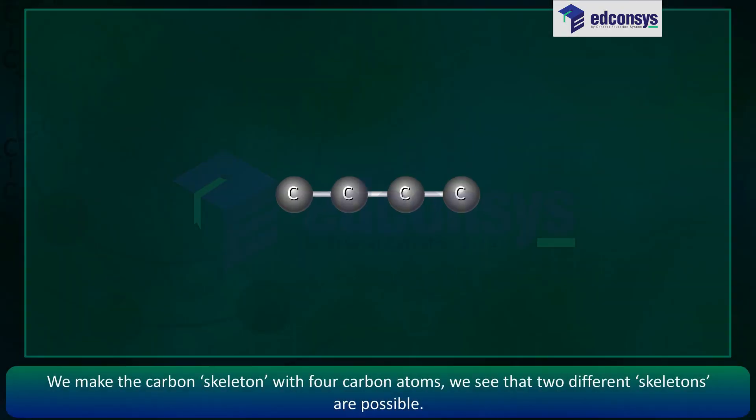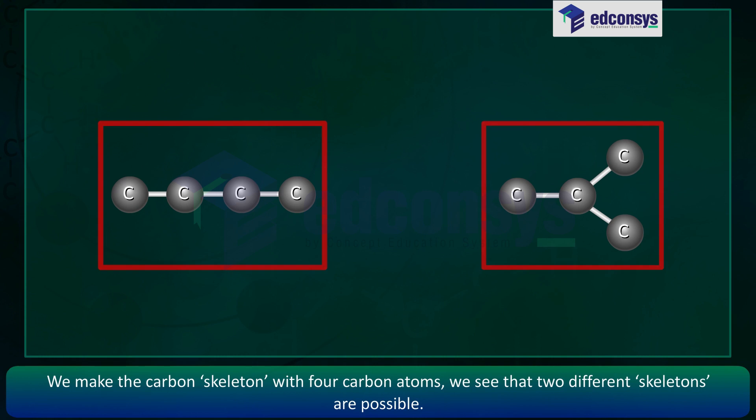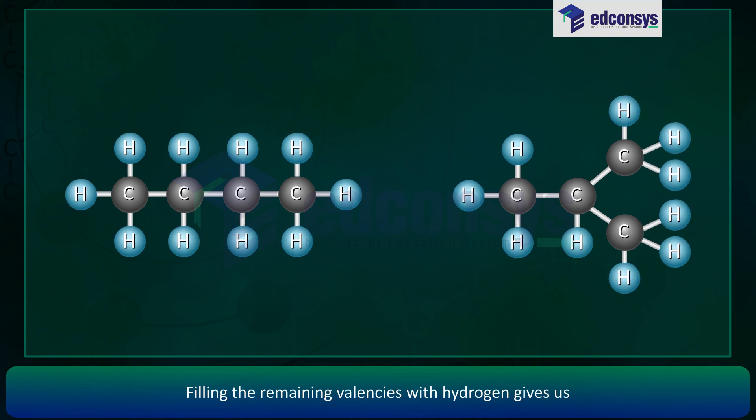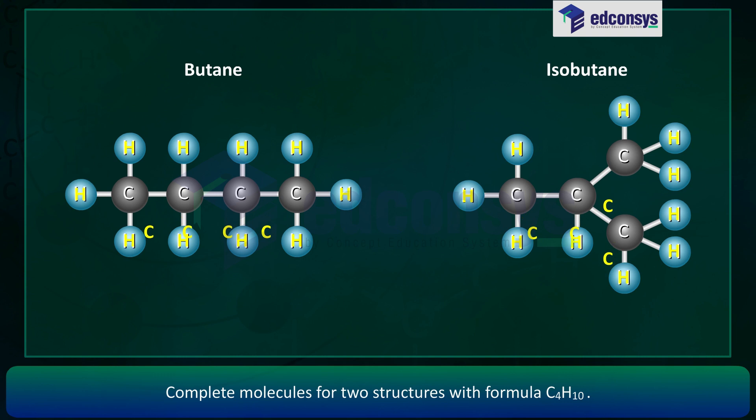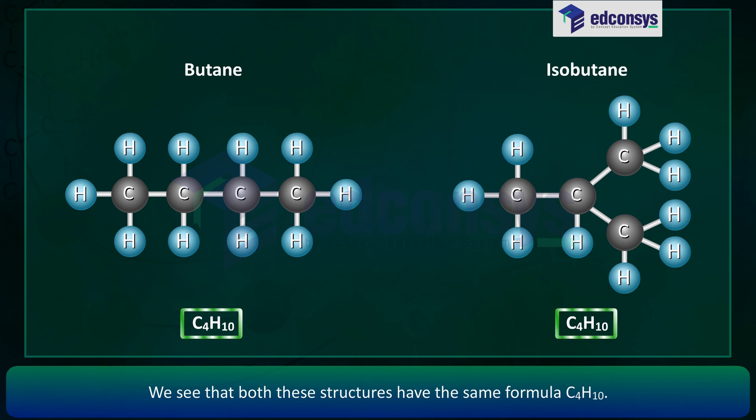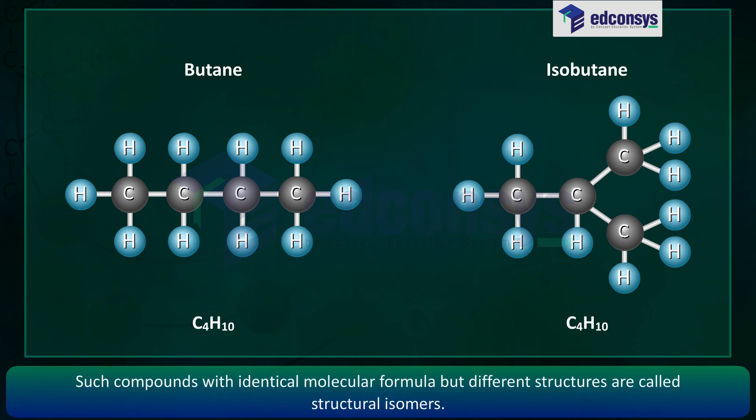We make the carbon skeleton with four carbon atoms. We see that two different skeletons are possible. Filling the remaining valencies with hydrogen gives us complete molecules for two structures with formula C4H10. Both these structures have the same formula C4H10. Such compounds with identical molecular formula but different structures are called structural isomers.